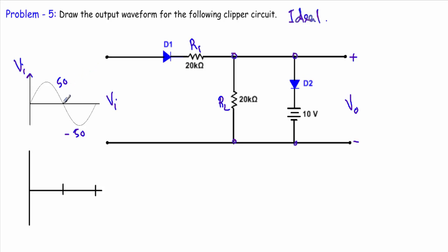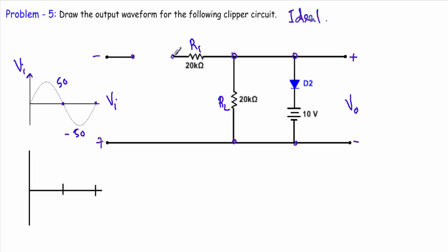During the negative half cycle, this terminal will be negative and this terminal will be positive. The positive terminal is connected with the N side of diode D1 and the negative terminal is connected with the P side. Therefore, diode D1 will be in reverse bias, and I can replace it with an open circuit. In the new circuit, the current I will be exactly equal to zero because this branch gets disconnected due to the reverse bias of diode D2.